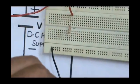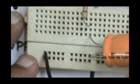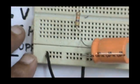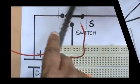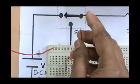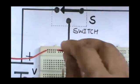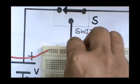Insert the capacitor into the breadboard. Remember, the second end of the resistor and the capacitor's positive leg should be in the same line. The positive of the power supply and the first end of the resistor should also be in the same line.